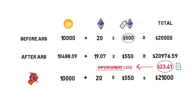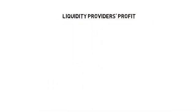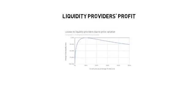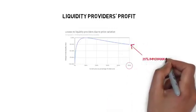Now that we understand what impermanent loss is, let's see how it can take away LP profits as the value of one asset increases relative to the other. For example, if the price of the asset in the pool goes up by 500%, LPs would experience a 25% impermanent loss. You can find a link to this chart in the description box below.